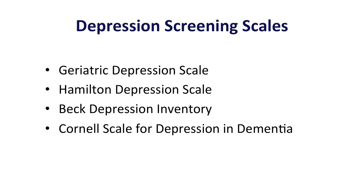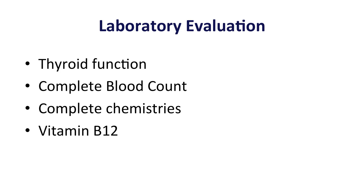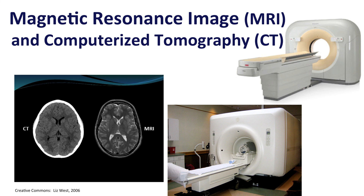It is important to do a depression screening. There are a number of scales that can be administered; the geriatric depression scale can be administered by an interviewer, which is helpful in this population. Cranial imaging is also recommended, though it is not specified whether a cranial CT scan or MRI is the image of choice. Cranial MRIs are commonly contraindicated in this population due to the presence of a pacemaker or other metal, or due to a patient's intolerance.